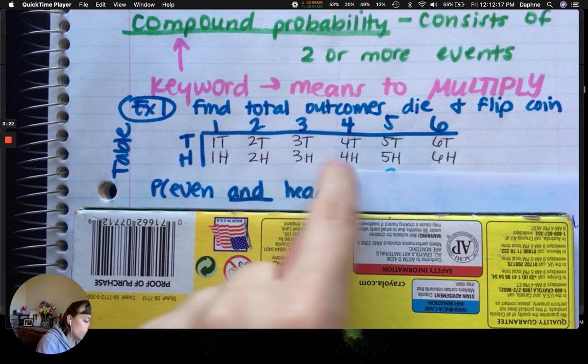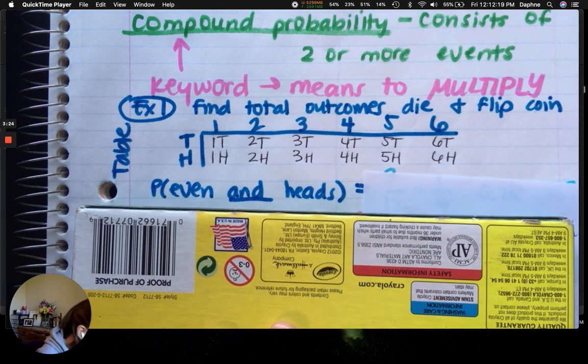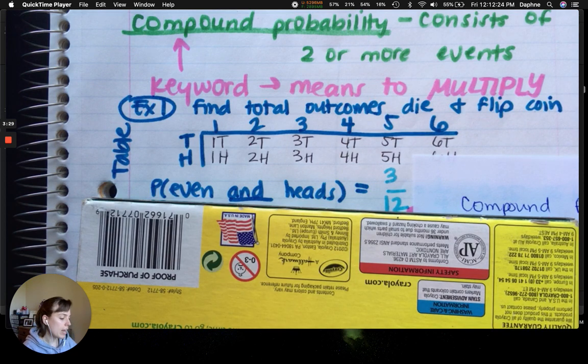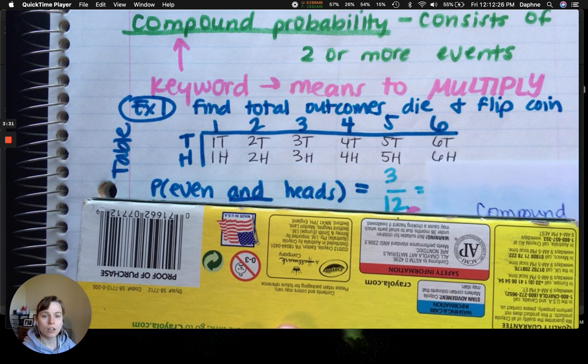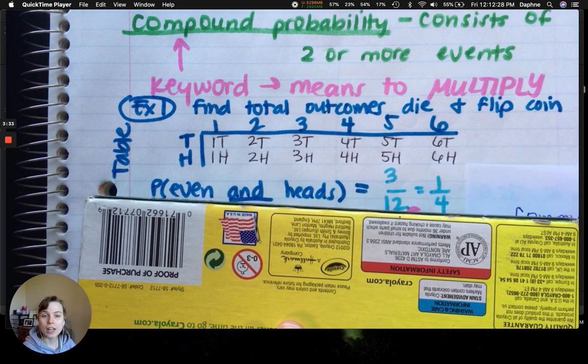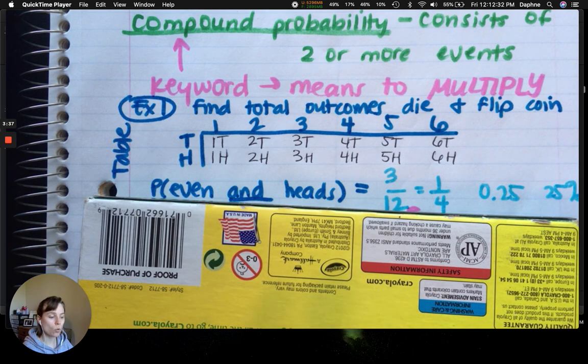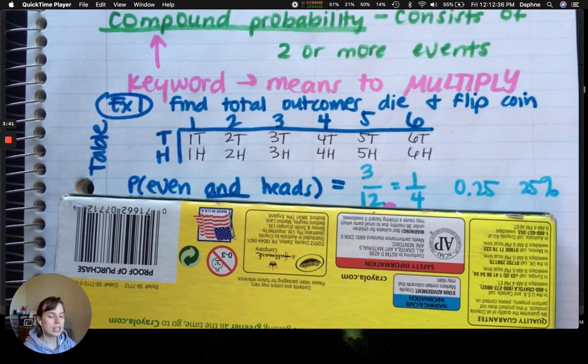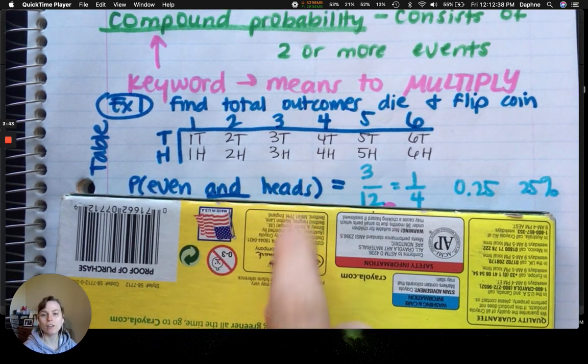That would be 1, 2, 3. So my fraction is going to be 3 twelfths. All right. And now I can simplify that. I'll get 1 fourth. When I divide that in my calculator, I'll end up with 0.25 and then 25%. So 25% is the chance of rolling an even and flipping a heads.